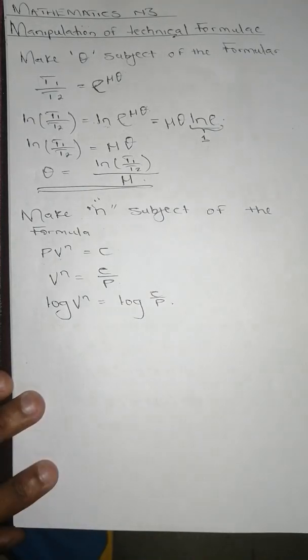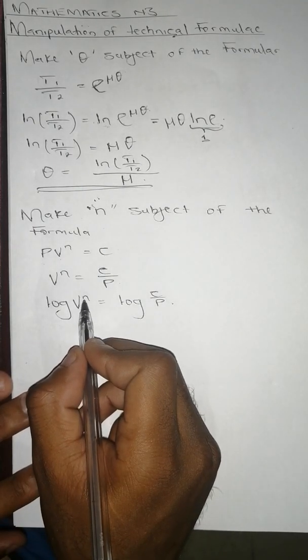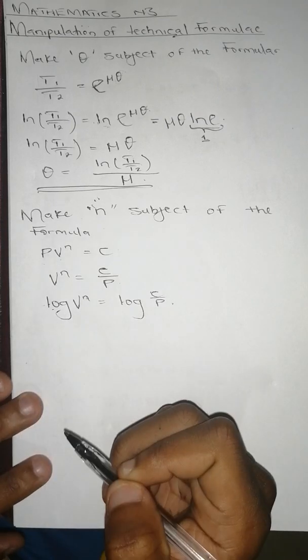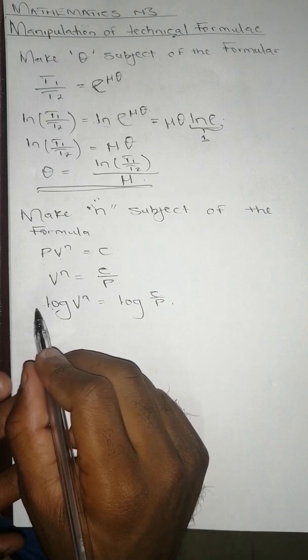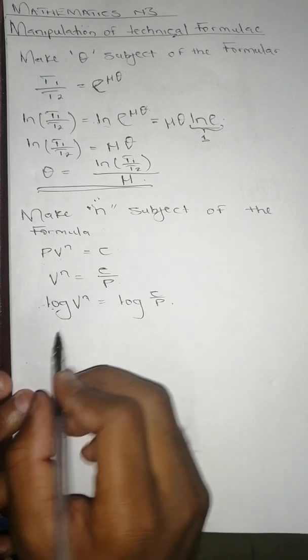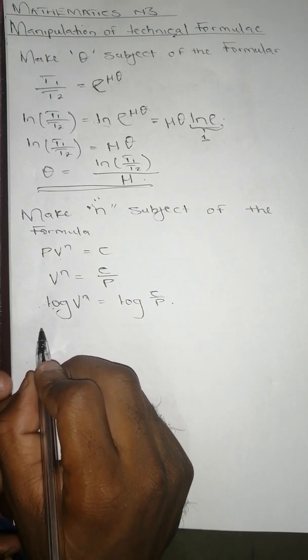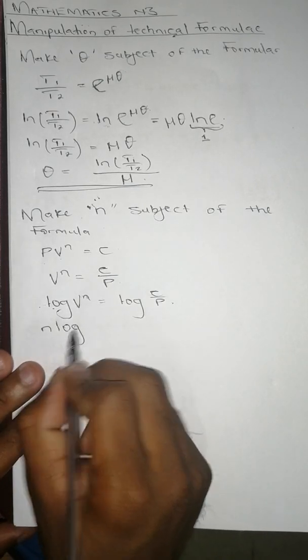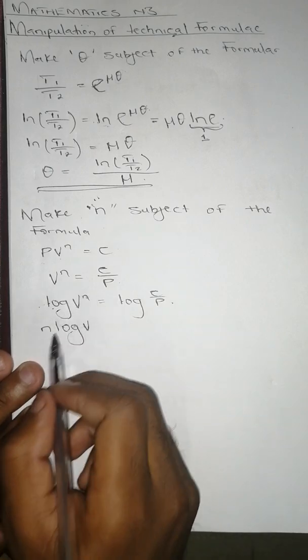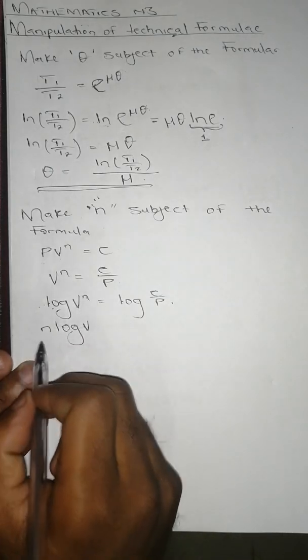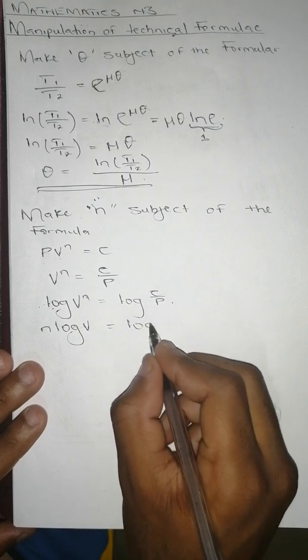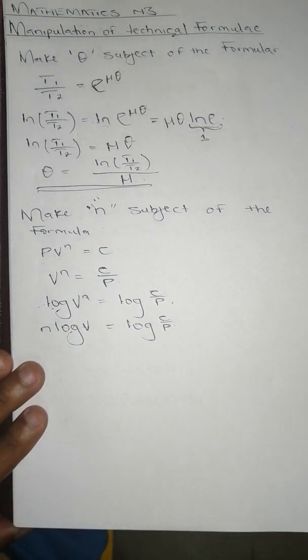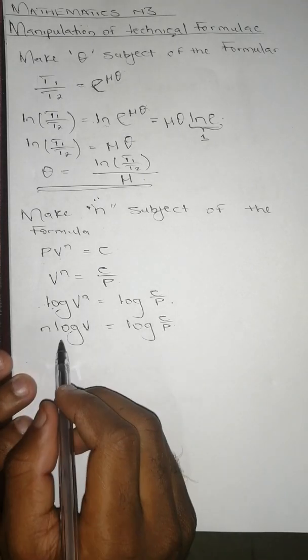We know that when we have log of V to the power n, we can bring this n behind here. So it's going to be n·log(V), so we're going to be left with n·log(V) equals to log(C/P).